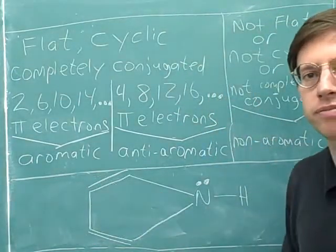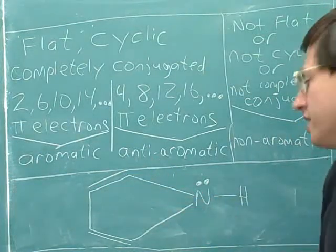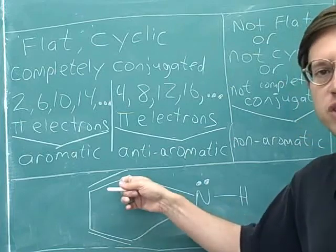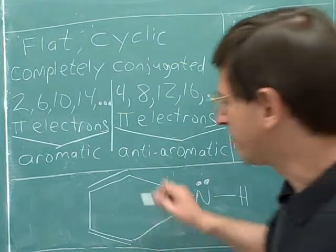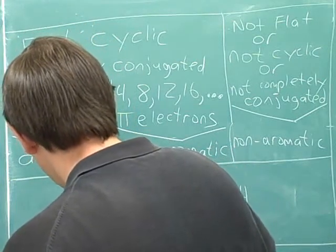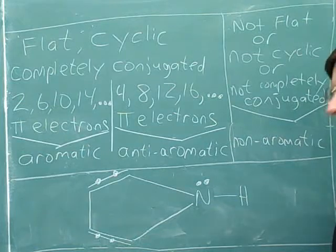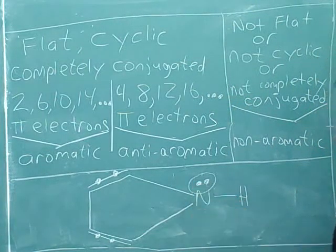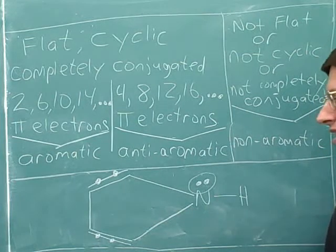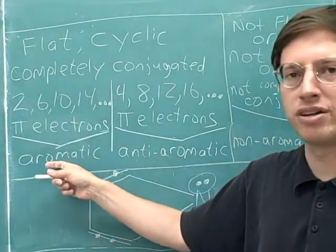Which category is this molecule in? Is it completely conjugated? Does it have sp2 everywhere? Yes — this nitrogen is sp2 because it has a lone pair and is connected to an sp2 atom. So everything is sp2 and this is completely conjugated. We have pi bonds, each contributing two pi electrons. This nitrogen is sp2 and puts its lone pair into the p-orbital, so that lone pair counts as pi electrons too. Total: six pi electrons — one, two, three, four, five, six. Six pi electrons overall puts us in the aromatic list, so this compound is also aromatic.